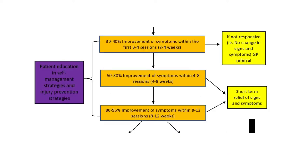Once red flags have been ruled out and nothing unusual has been found in the assessment, a treatment trial is appropriate. This is the first orange square on the pathway. A treatment trial of three to four treatments is conducted, during which you would always expect an improvement in the condition of between 30 to 40 percent.